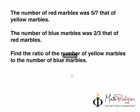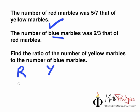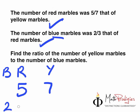Now, how do we do this? It's actually pretty simple. All you have to do is draw a table. First off, you have your first clue: the number of red marbles was 5 to 7 that of yellow marbles. So we have yellow and red — that's 5 to 7, meaning 5 parts to 7 parts. Then the number of blue marbles was 2 to 3 that of red marbles, so blue to red is 2 to 3.